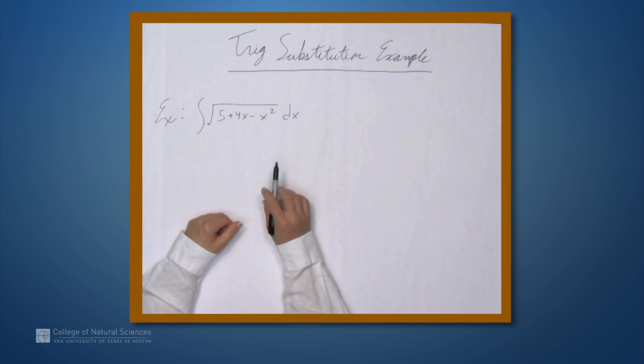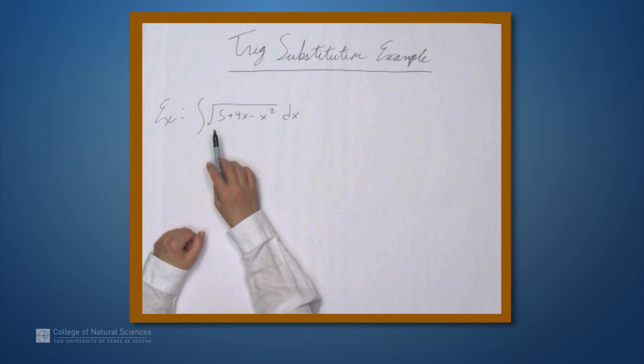So we're here at the example table. In this video, we're going to look at an example of trig substitution. In particular, the integral of the square root of 5 plus 4x minus x squared dx.